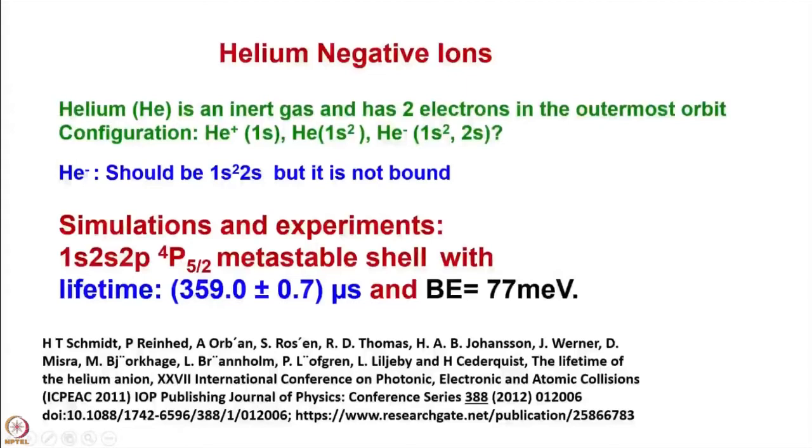Helium is an inert gas and has two electrons in the orbit. He minus should be 1s2, 2s in ground state, but it is not found. Binding energy calculations show that. However, simulations as well as experiments have shown that there is a state called 1s2s2p. That means these electrons they get distributed to 1s2s2p and that state is called 4P5 and a half metastable state, which has a lifetime of 359 microseconds. So binding energy of 77 millielectronvolts. So it is very loosely bound.